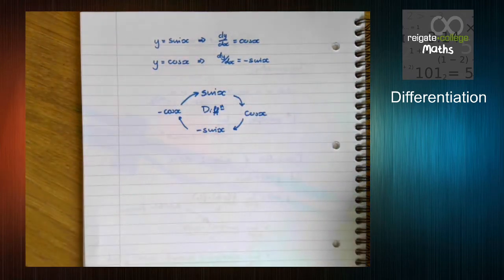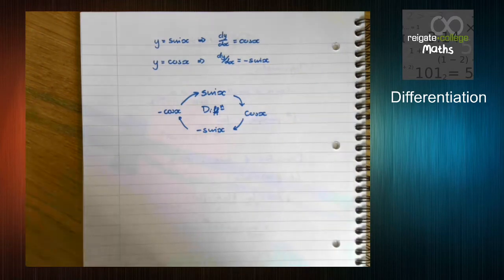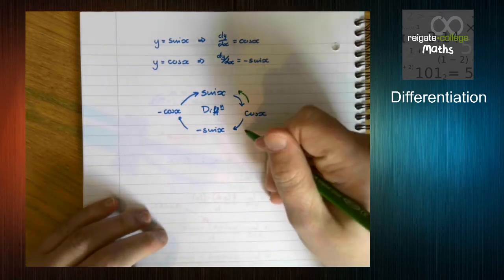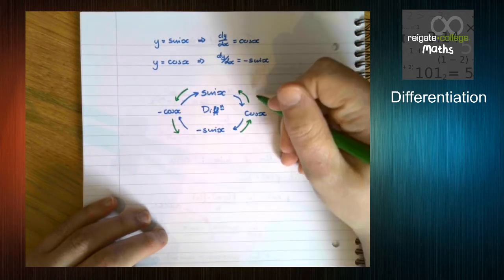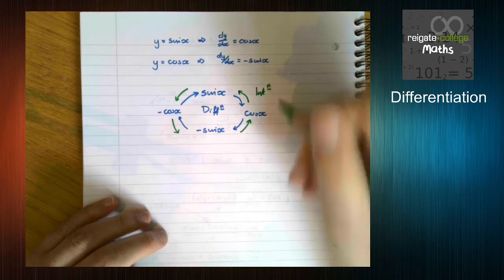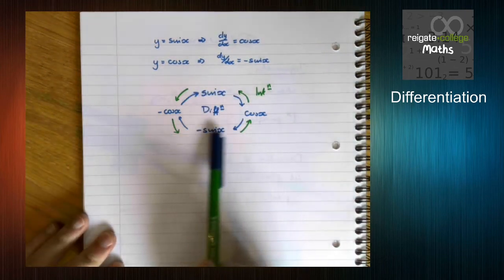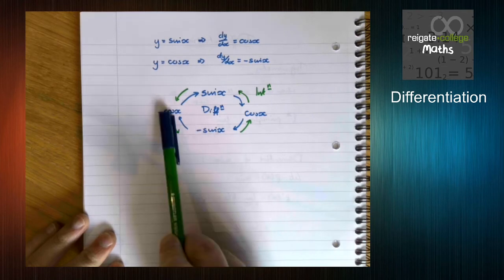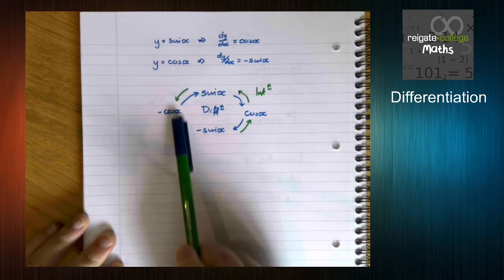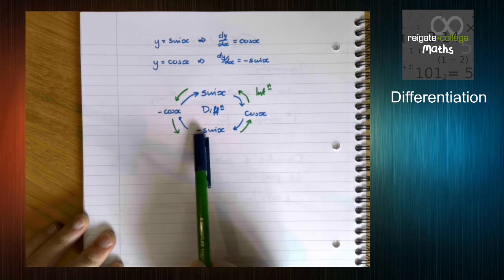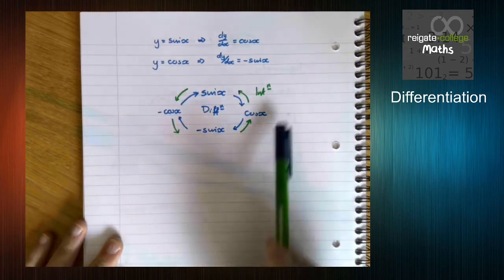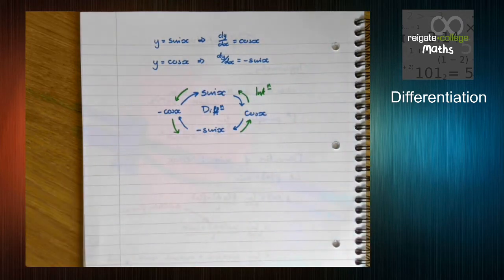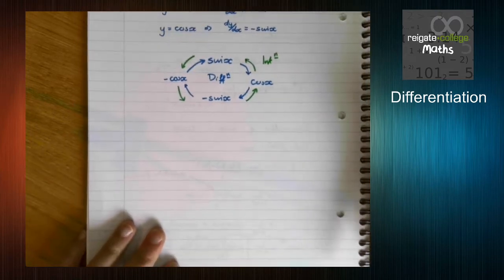It's useful to note that integration does this backwards. Differentiation goes sine → cos → minus sine → minus cos → sine; integration goes the other way around. You can use this cyclical idea to help remember the different relationships.